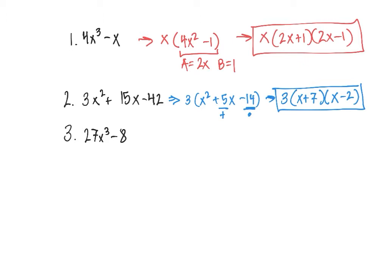Problem 3. We have two terms, and both of those terms are perfect cubes. So my a is going to be 3x, and my b is going to be 2, and I'm going to use the formula for a cubed minus b cubed, which is a minus b times a squared. So 3x squared is 9x squared, plus a times b, so that's 6x, plus b squared, which is 4.